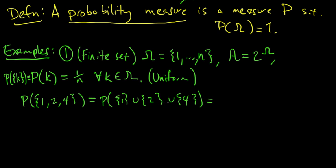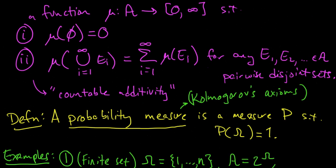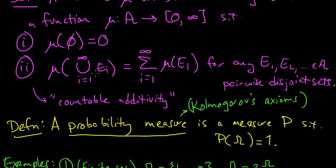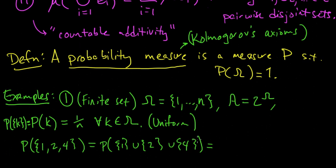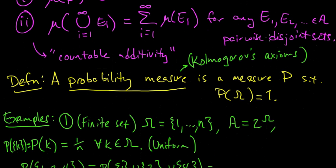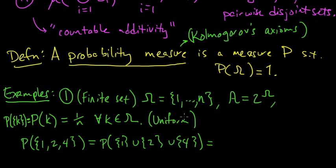And by countable additivity of a probability measure, remember we have this condition, which also holds in the case of finite unions. Because we could take the set with 4 to be all of the ones 3, 4, 5, 6, 7, 8, 9, etc., up to infinity.